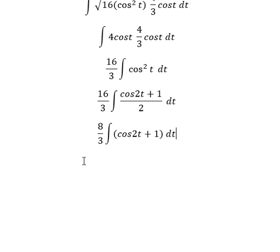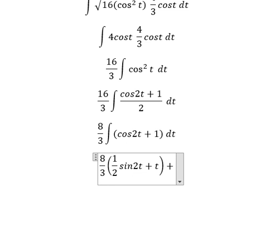And now we can get the final answer. The integration of cosine t, that is 1 over 2, so we have sine 2t. The integration of number 1 we have t, and we put the constant c.